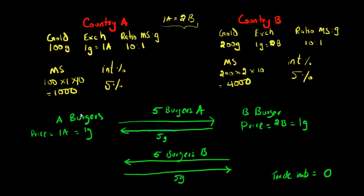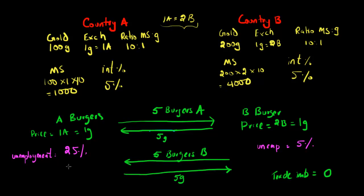Let's assume that Country A and Country B have very different unemployment rates. Country A has an unemployment rate of 25 percent and Country B has an unemployment rate of five percent. A 25 percent unemployment rate means 25 percent of the population that could be working don't have a job. People in Country A are very angry at their government and want them to do something about it.